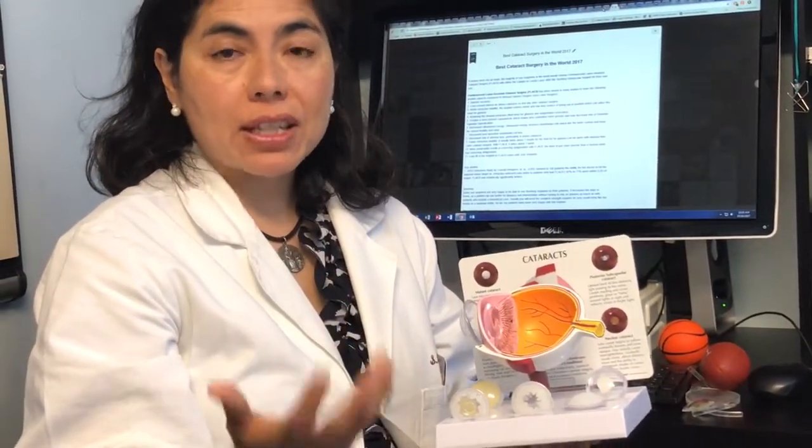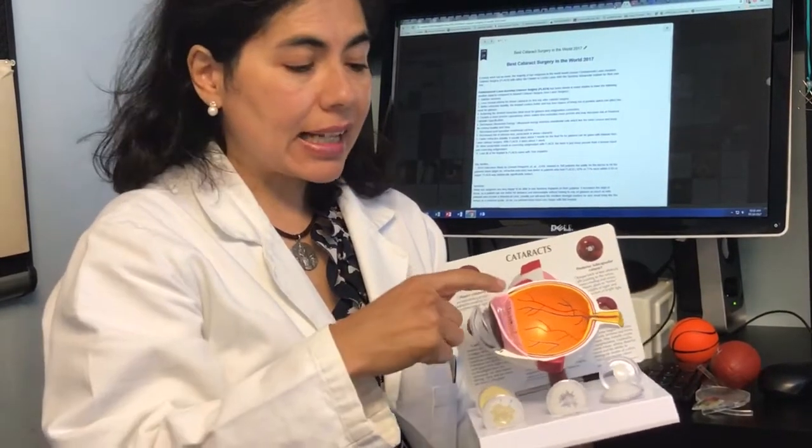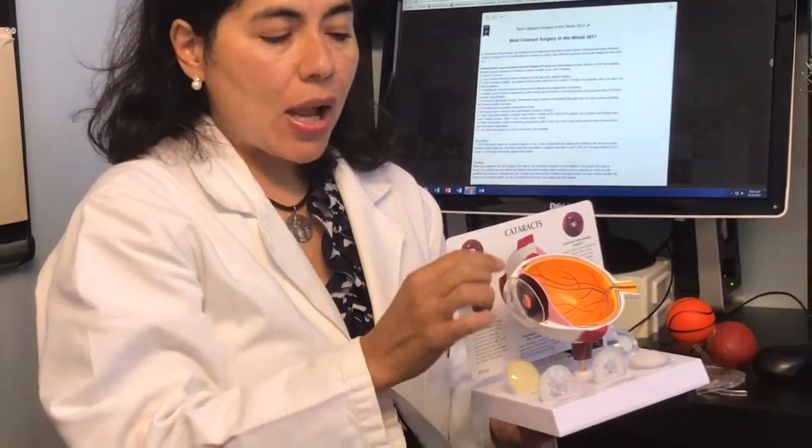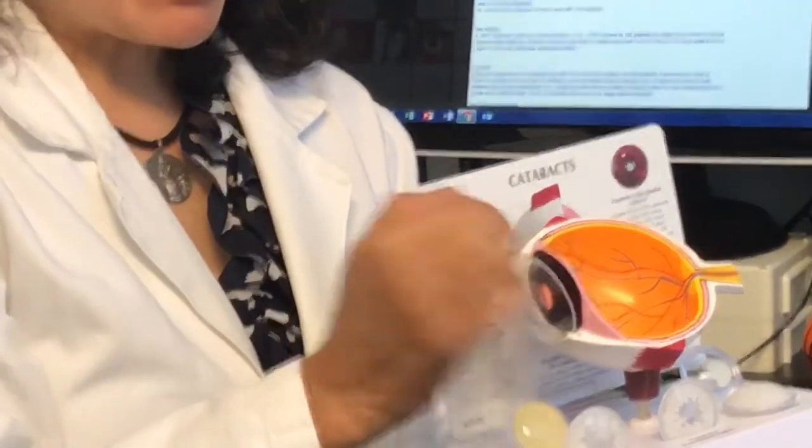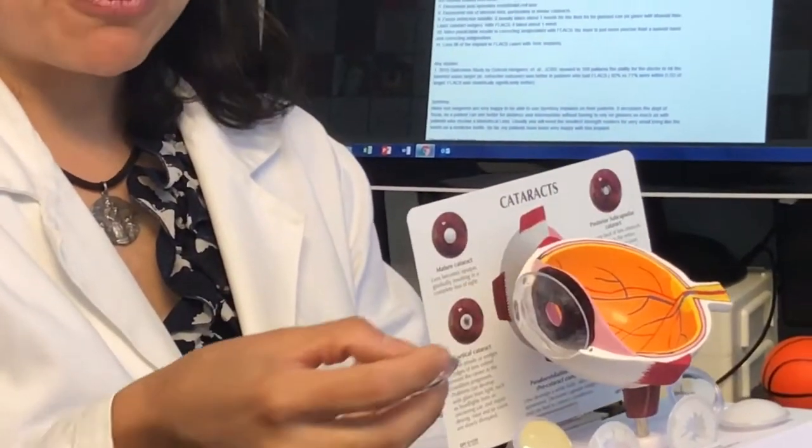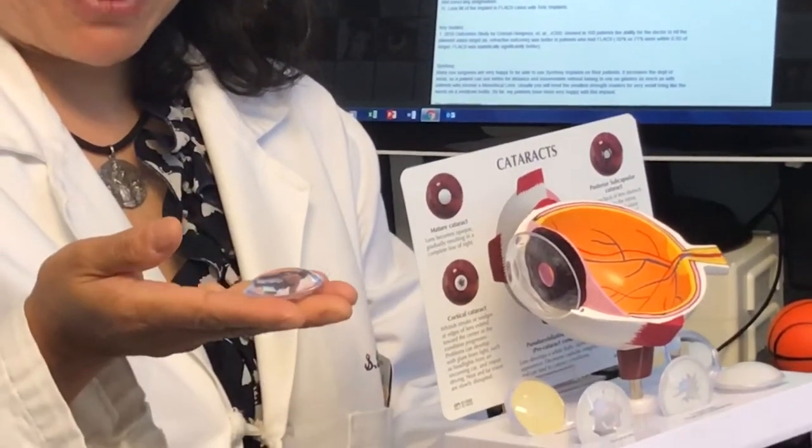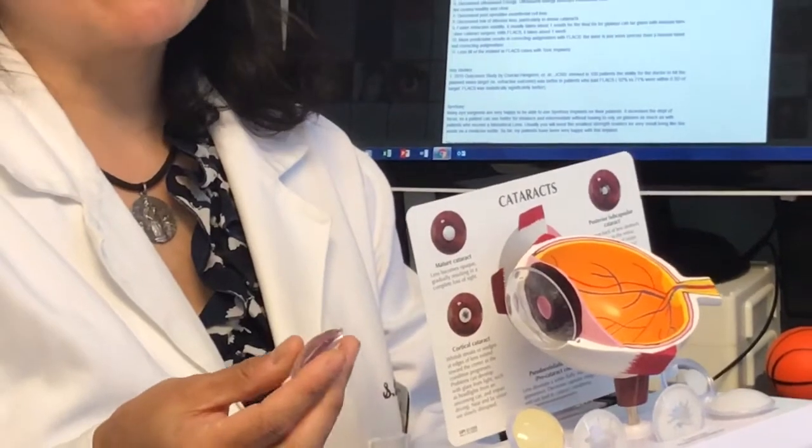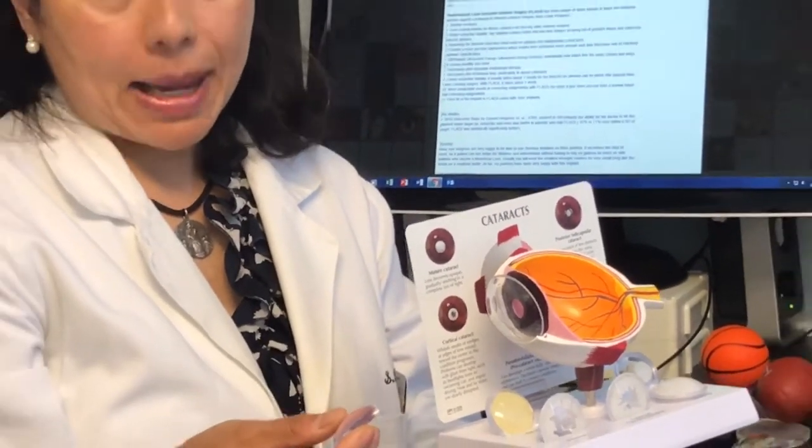When we do cataract surgery, we try to ideally correct for astigmatism, because it's our chance to put your prescription inside the implant we're going to put in the eye. We make a very small microscopic incision after the pupil's been dilated, and we go in through the pupil. What we're doing is basically cutting open the front surface of the lens, like the front surface of a pillowcase, taking out the pillow, and trying to leave the back part of the pillowcase, the capsule, intact.